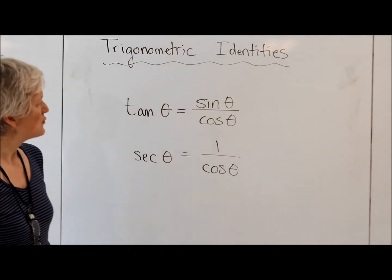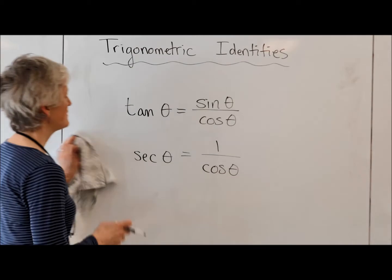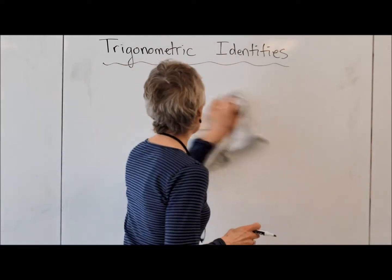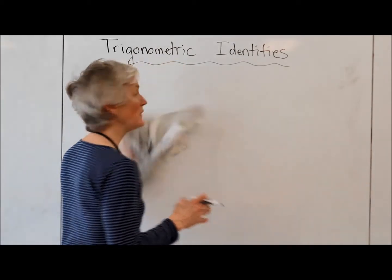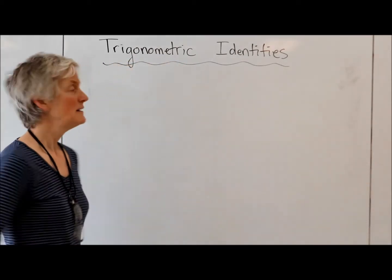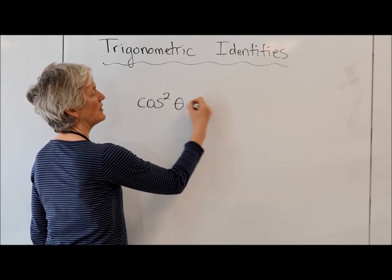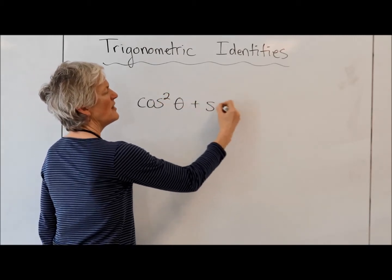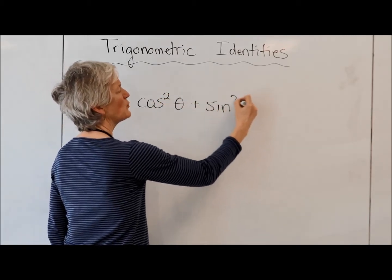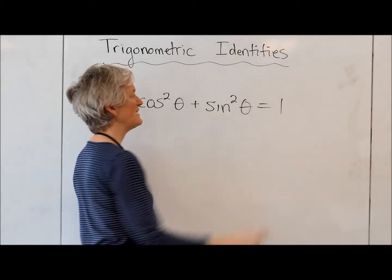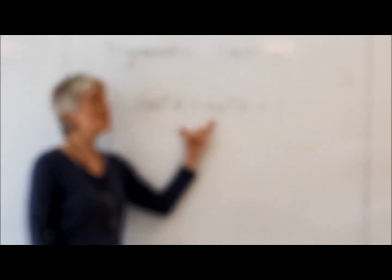But there are other trig identities that you're going to meet which can be proven. One is the one I already mentioned — the Pythagorean trig identity. This is a trig identity, and it's always true.